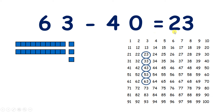So the units digit stays the same, because we still have these 3 units. But we started with 6 tens, we took away 4 tens, so we were left with 2 tens.